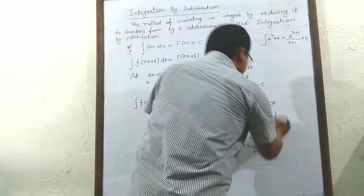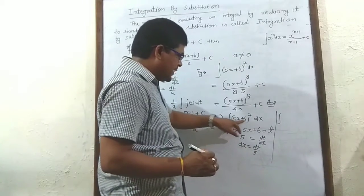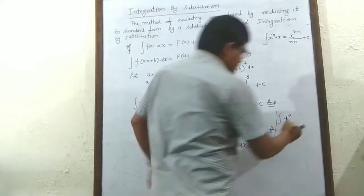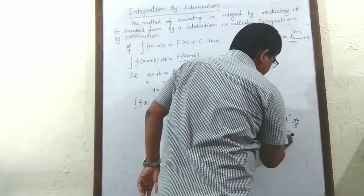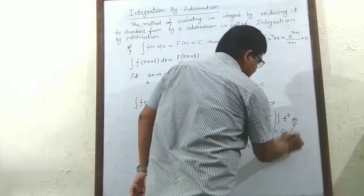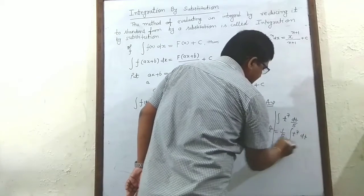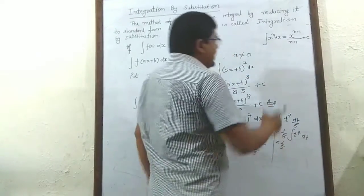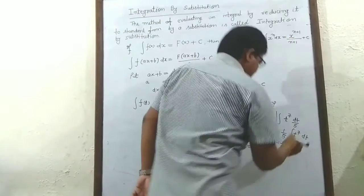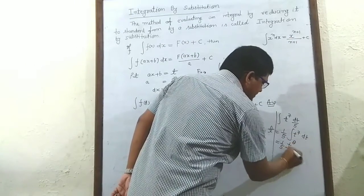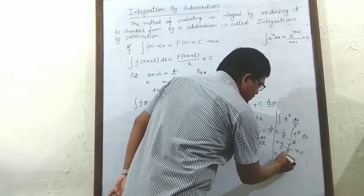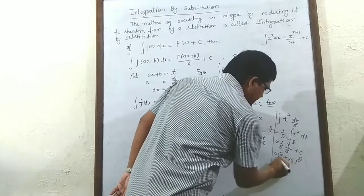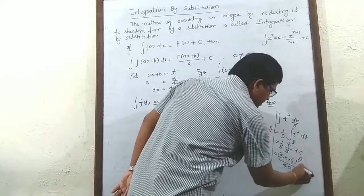Substituting: the integral of (5x + 6)^7 dx becomes the integral of t^7 with dx = dt upon 5, equal to 1 upon 5 times the integral of t^7 dt. Applying the formula x^n: we get 1 upon 5 times t^8 upon 8 plus c. Putting back the value of t: (5x + 6)^8 upon 40 plus c. Same answer.